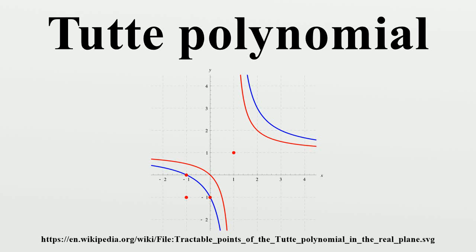The Tutte polynomial, also called the dichromate or the Tutte-Whitney polynomial, is a polynomial in two variables which plays an important role in graph theory. It is defined for every undirected graph and contains information about how the graph is connected.